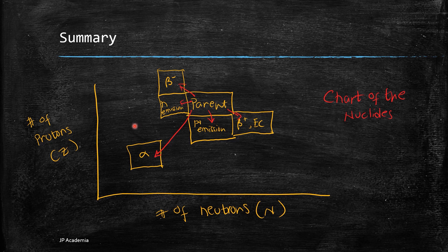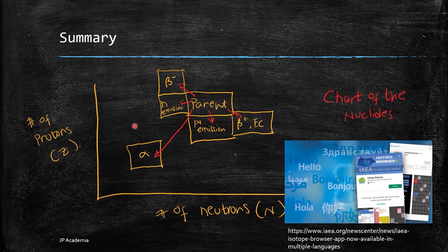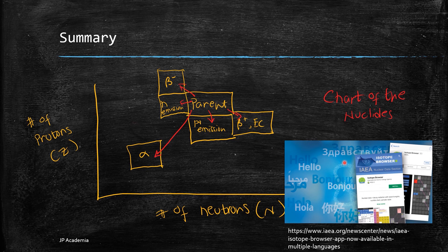If you want to search for a nuclide decay type or radiation and half-life, you can also check this app for more details. This is an isotope browser app of IAEA. It provides the properties of more than 4,000 nuclides and isomers and among other things available in iOS and Android devices.